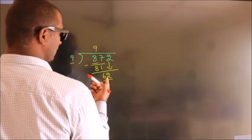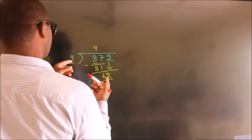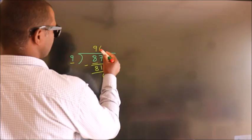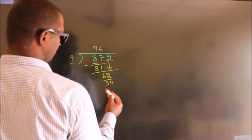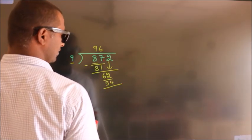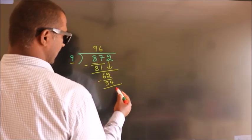A number close to 62 in the 9 table is 9 times 6, which is 54. Now we subtract, we get 8.